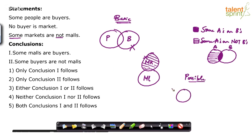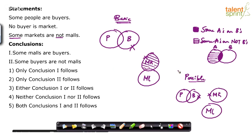What we have drawn is the basic diagram. Now let me draw the possible diagram. Some people are buyers — no problem. No buyer is market — draw them separately. Some markets are not malls — we can draw malls in a way where all those markets are not malls. So 'some markets are not malls' does not mean that some markets have to be malls; they may or may not be.